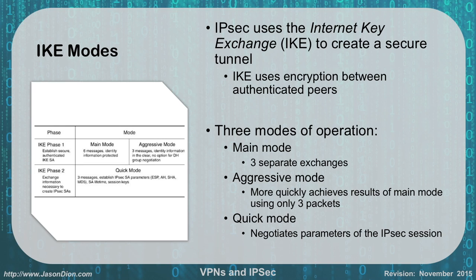Inside IKE we have two phases: phase one and phase two. In phase one we're going to establish a secure authenticated tunnel using security associations, and in phase two we're going to actually exchange the information to create that security association.